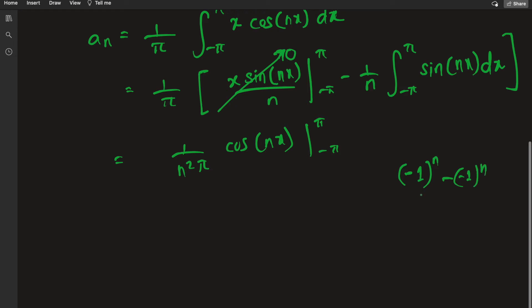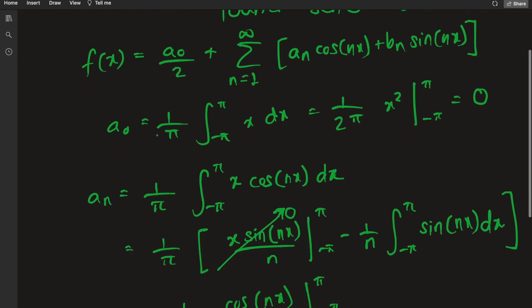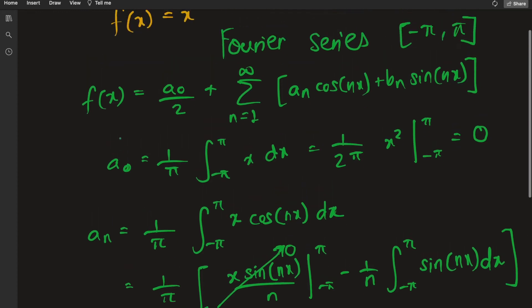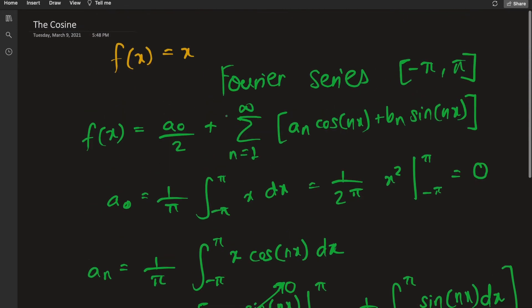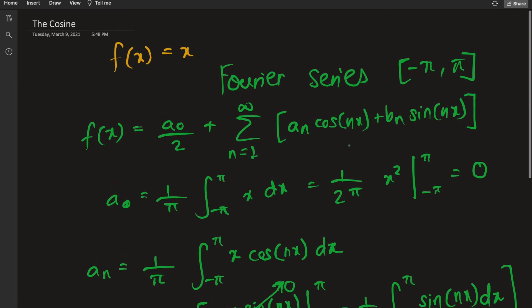So you have this minus this basically, which will cancel out to zero. So it seems that a₀ and aₙ in our case are both zero. Let's look at the sine coefficient now on the fresh page.